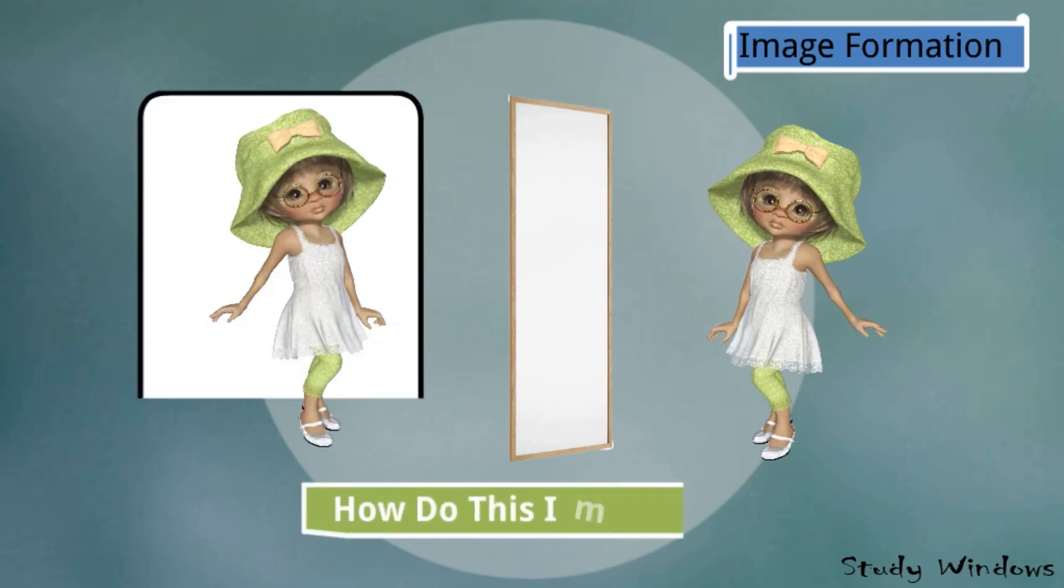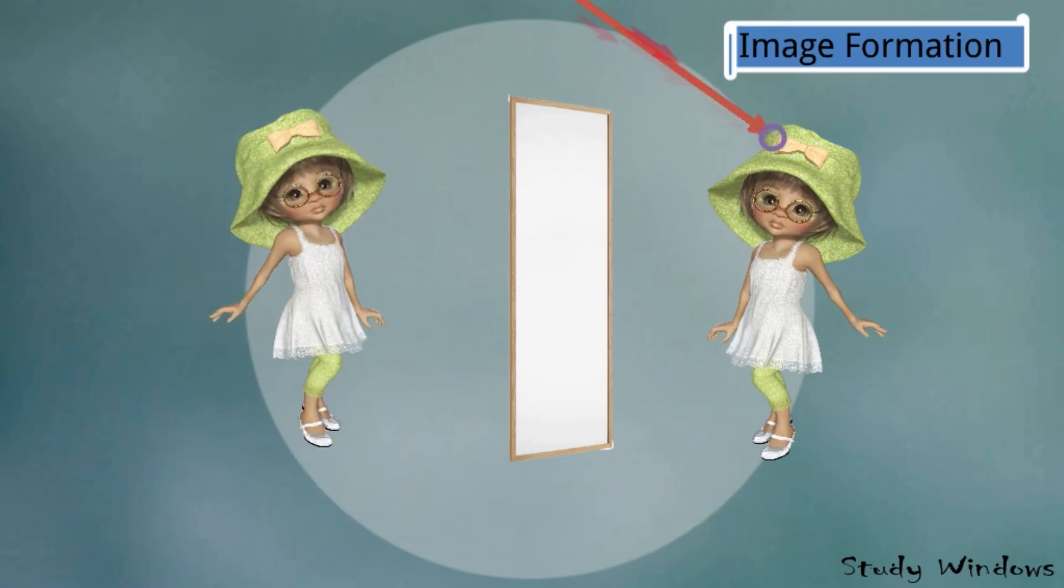Now how does this image form? Light rays fall on the object - here the object means the girl. The girl is a human being, an illuminated object. We don't have light but we can reflect. Light rays fall on the girl and are reflected, and these reflected rays fall on the mirror.